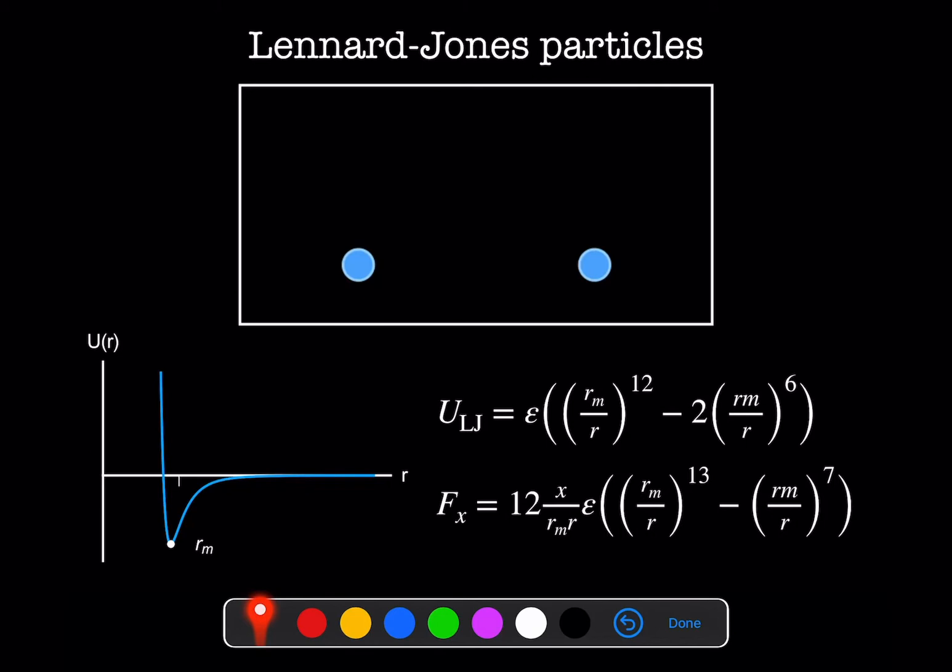If we take minus the derivative of the potential in the x direction, we have a term that goes like x over r. We also have terms that go like 1 over r to the 13th minus 1 over r to the 7th.